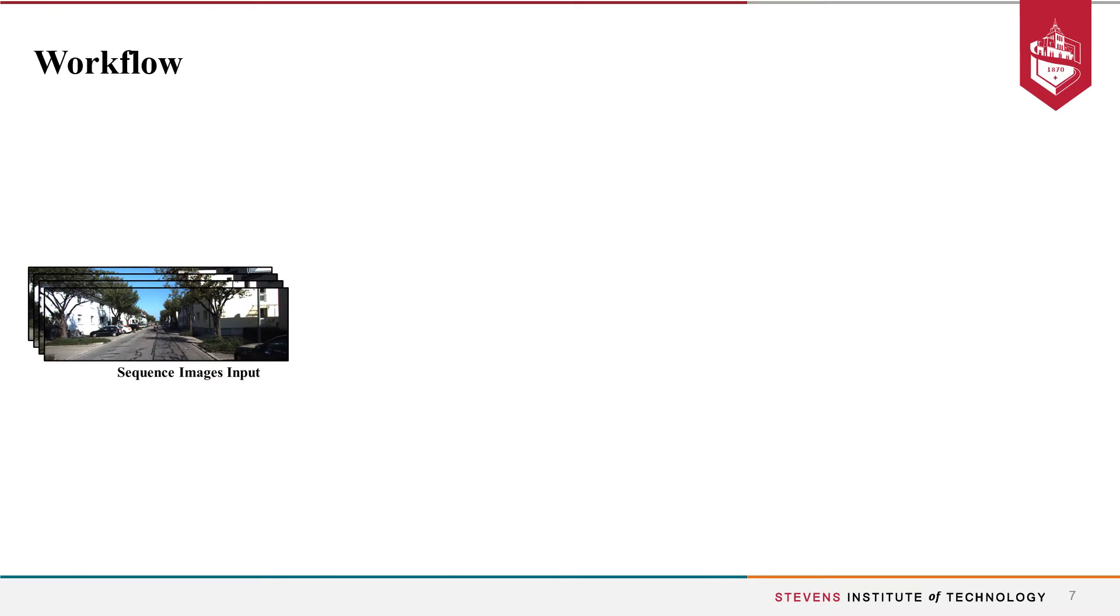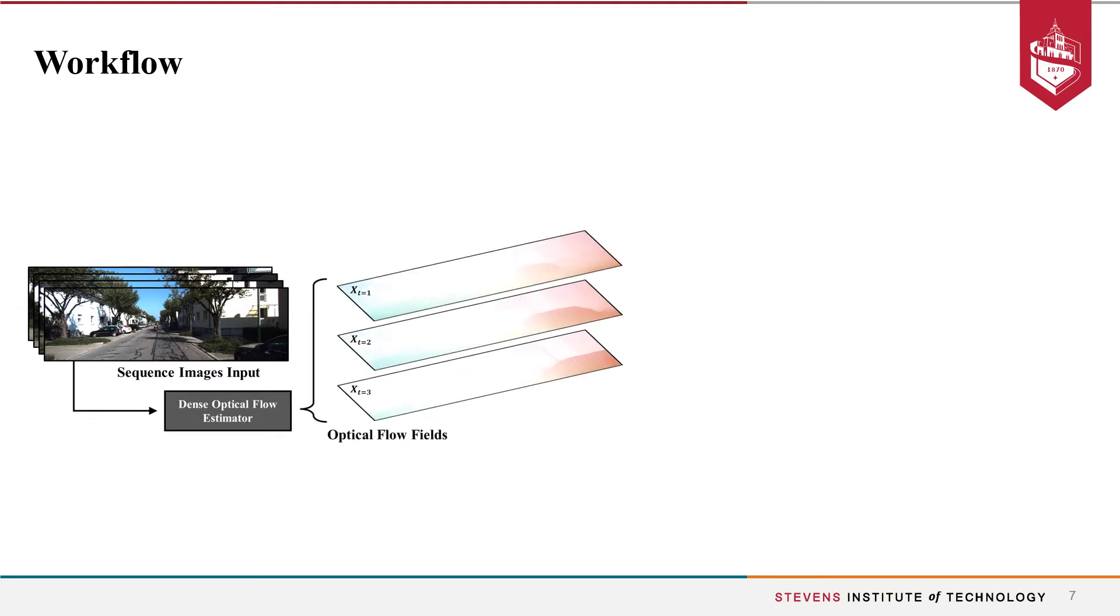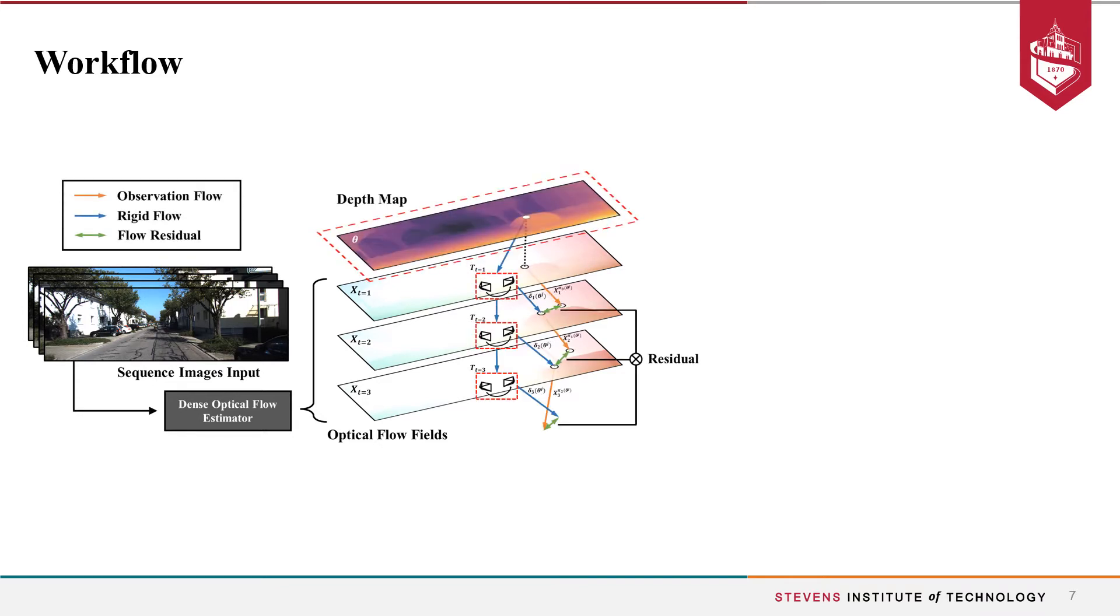The overall workflow of our method is, with a given video sequence input, we first send them to a dense optical flow estimator to get the optical flow field sequence. Then, the objective of our framework is to minimize the difference between the observed optical flow and the rigid flow, obtained by warping the depth field with camera poses.